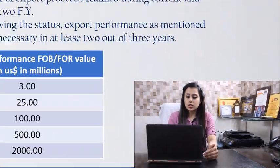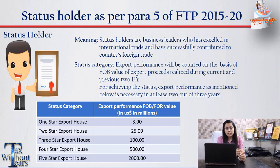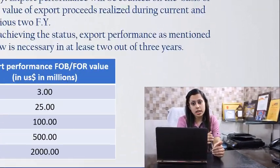What is the meaning of a status holder? Status holders are business leaders who have excelled in international trade, and this is a privilege given by the government to the exporter. The status categories are defined on the basis of export performance, like 1 Star Export House, 2 Star Export House, and likewise. If you fall in any of these status categories, you can opt for the LUT method and export your goods or services accordingly.